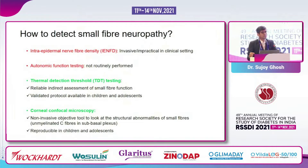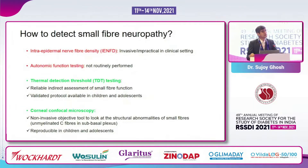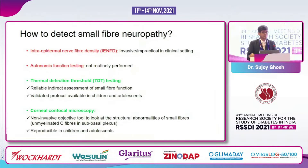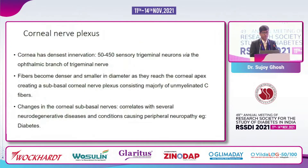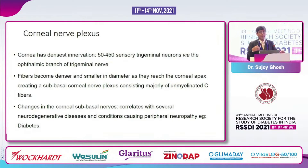The second approach could be autonomic function tests — but how many of us are actually doing that in clinical practice? It's not a very practical test in routine use. Next could be thermal detection threshold, which some of us are doing in bigger institutes in a research setup — looking at warm and cold perception tests. And the bottom line is what we are going to talk about: corneal confocal microscopy.